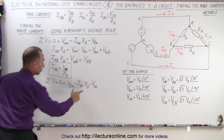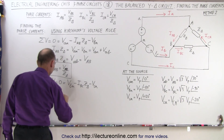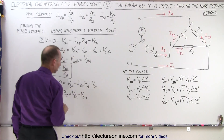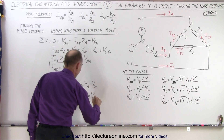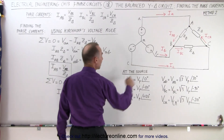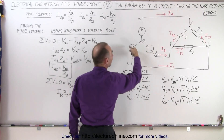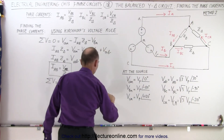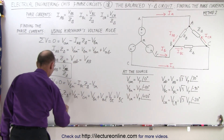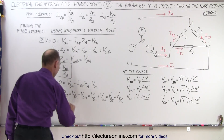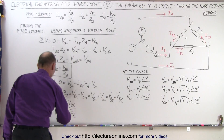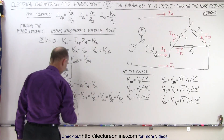We solve this for IBC by moving terms to the left side: IBC times the impedance is equal to VBN minus VCN, which can be written as VBN plus VNC, which is the line voltage from B to C. So this equals VBC. And finally, IBC is equal to VBC divided by the impedance.